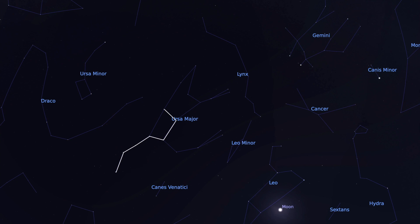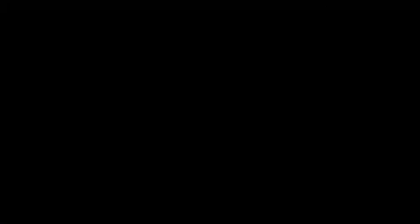Once you've found the Big Dipper, draw a line through the pan handle into the pan itself and eventually to the last two stars on the right-hand edge of the pan, then keep going with that line in a straight line into the sky. The next bright star that you get to — that star there — is our North Star. Its real name is Polaris, but it's more commonly known as the North Star, and that is how you find it. All of the other stars in the sky appear to spin around this one star.